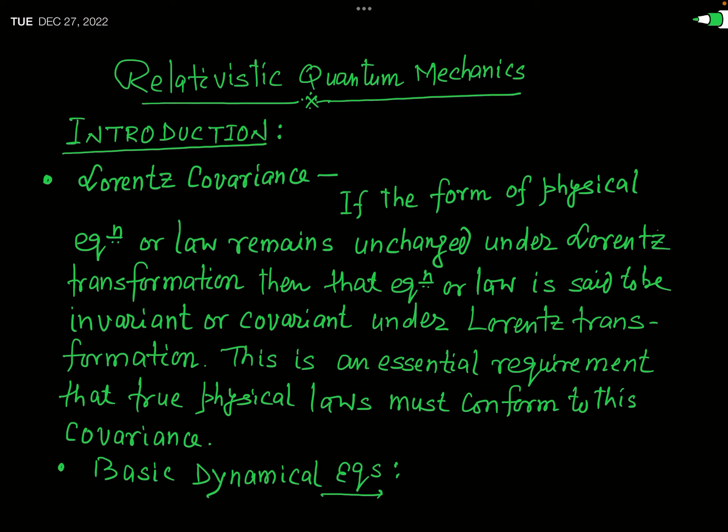If the form of a physical equation or law remains unchanged under Lorentz transformation, then that equation or law is said to be invariant or covariant under Lorentz transformation. This is an essential requirement that true physical laws must conform to. The basic dynamical equations studied so far are actually two basic laws.